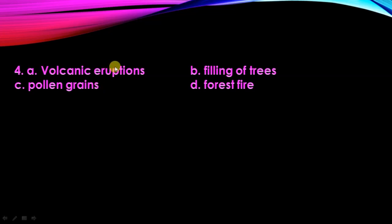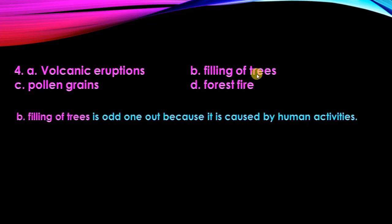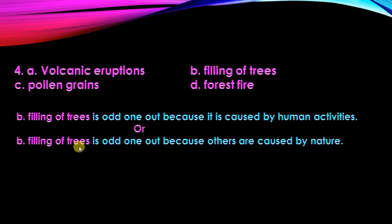Fourth set: volcanic eruption, felling of trees, pollen grains, and forest fire. Felling of trees is odd one out because it is caused by human activities, while the others — volcanic eruption, pollen grains, and forest fire — are caused by nature.